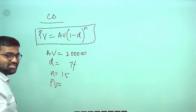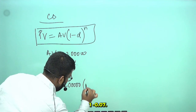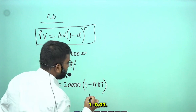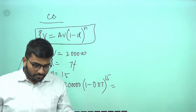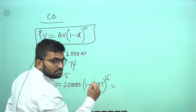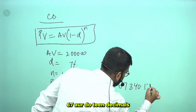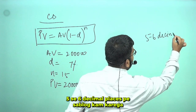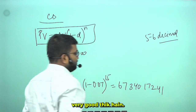So the calculation is: 2 lakhs × (1 - 0.07)^15, which equals 2 lakhs × (0.93)^15.